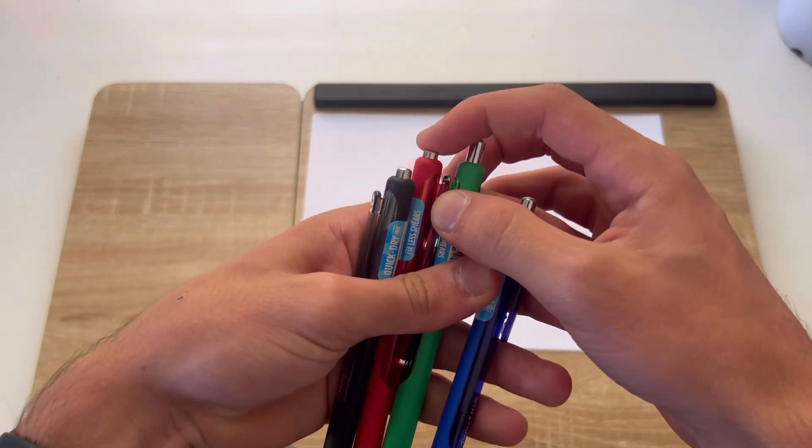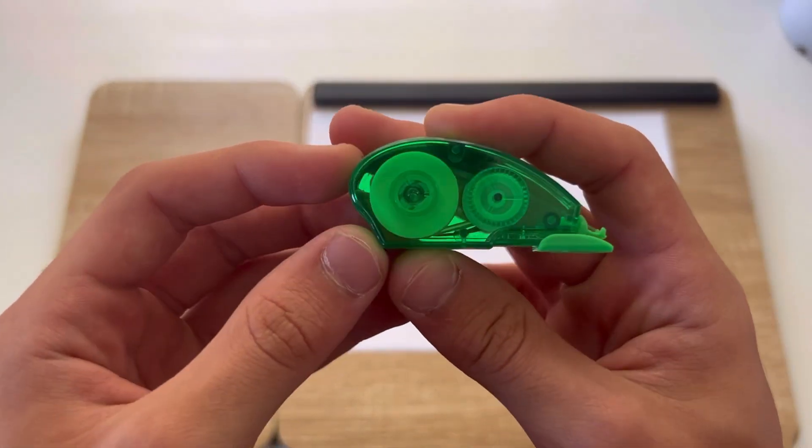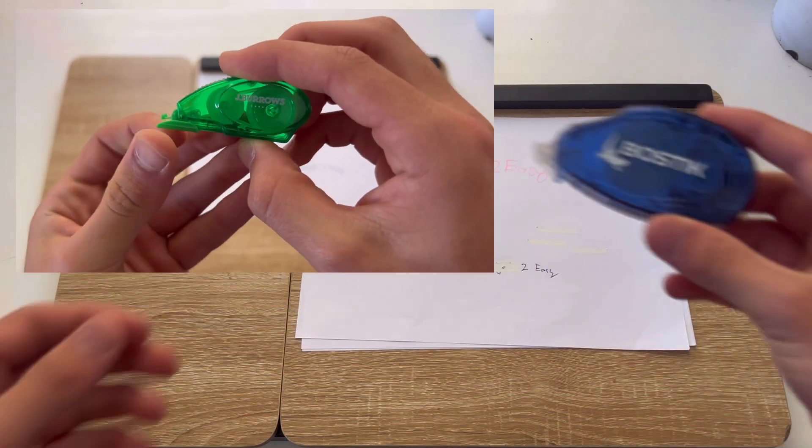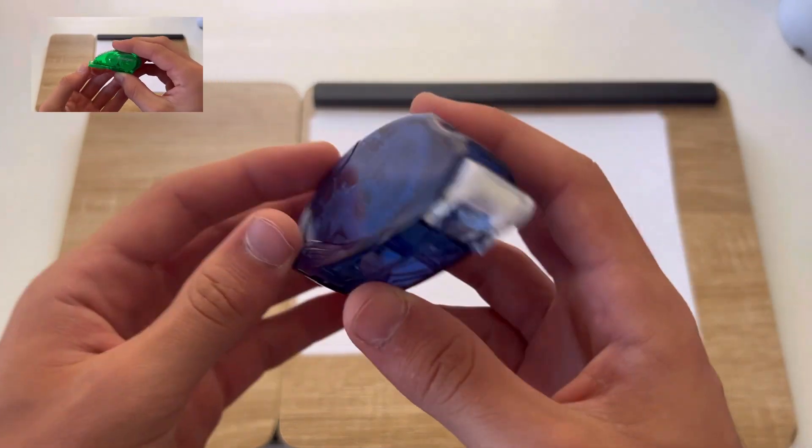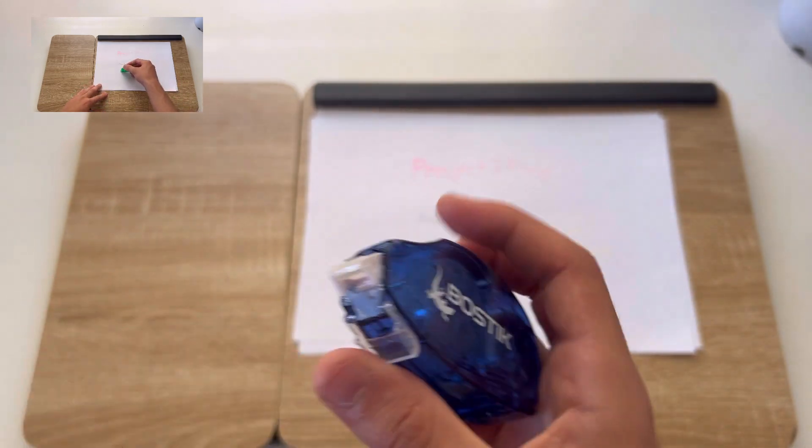Now onto the small things. I use the Jay Burrows Correction Tape that works like a charm. Instead of a glue stick, I use the Bostick Glue Tape, which is a permanent double-sided tape that works faster and with less mess than traditional glue sticks.